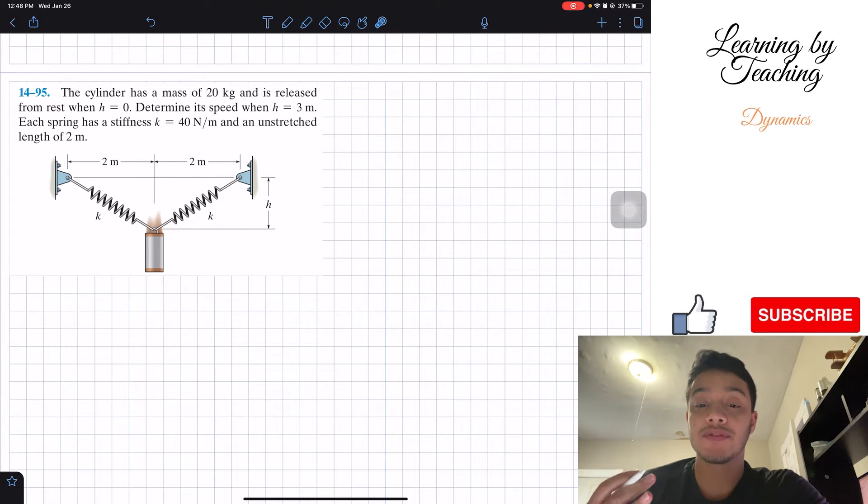It says the cylinder has a mass of 20 kilograms and it's released from rest when h equals zero. Determine its speed when h equals three meters. Each spring has a stiffness k equal to 40 newtons per meter and an unstretched length of two meters.